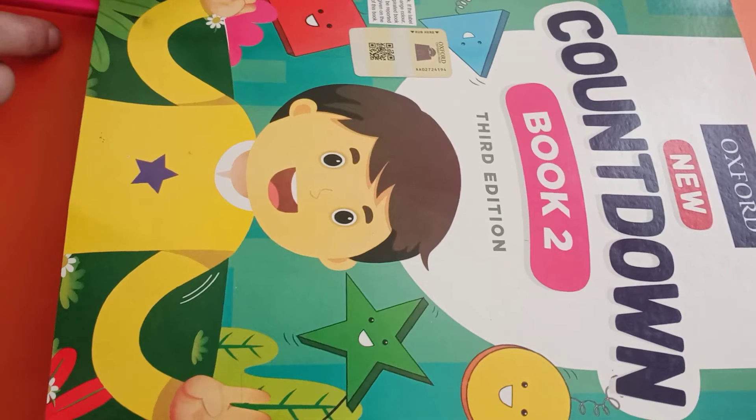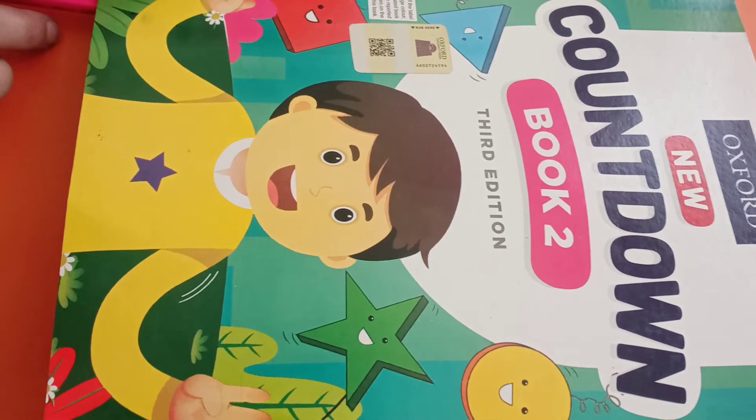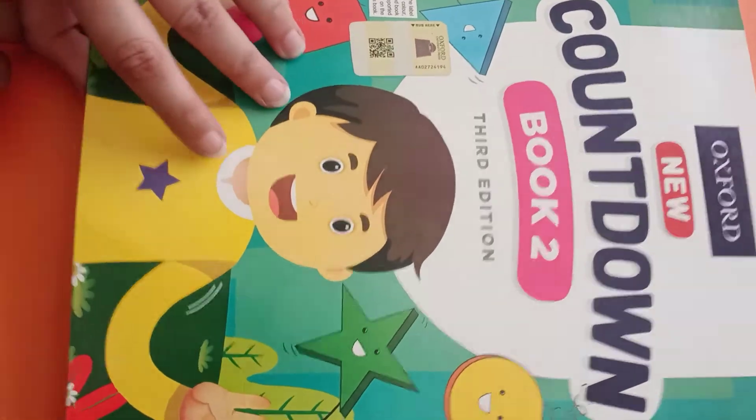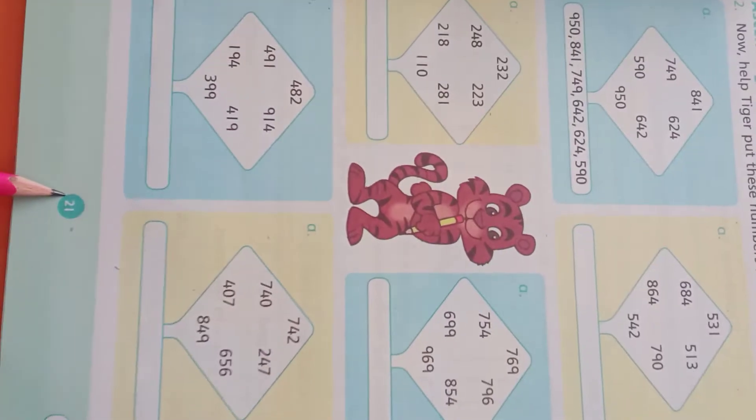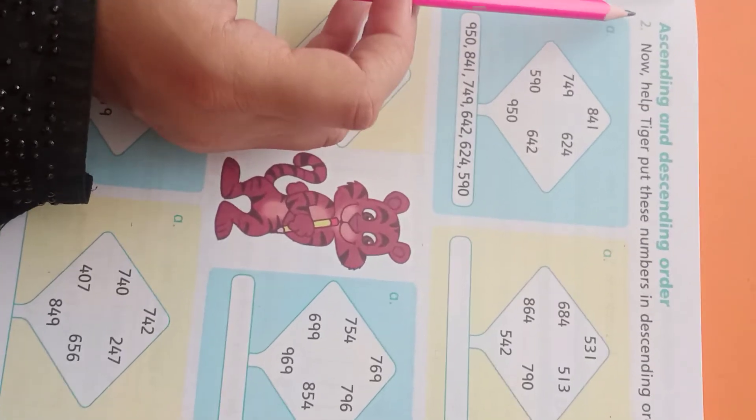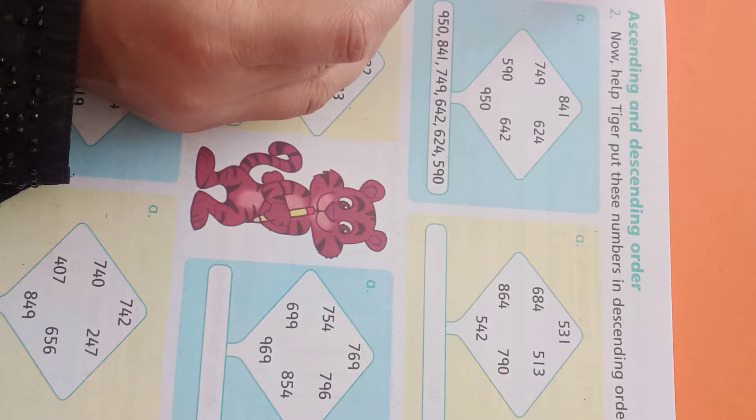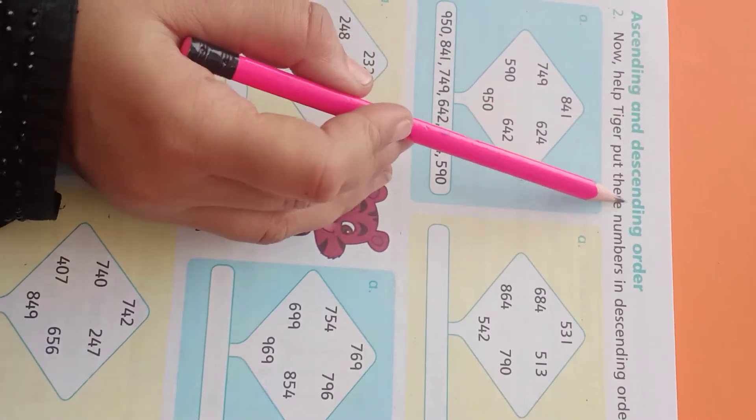Now, when we are going to start the lecture, we have studied descending order. Let's open page number 21. Here is page number 21. Question number 1 was our ascending order. Question number 2 was our descending order. Our chapter name is ascending and descending order.